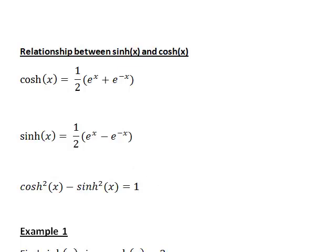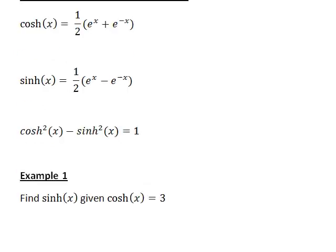Let's have a look at examples of finding one of these quantities given we know the other one. First, let's look at finding sinh(x) if we know that cosh(x) is equal to 3.